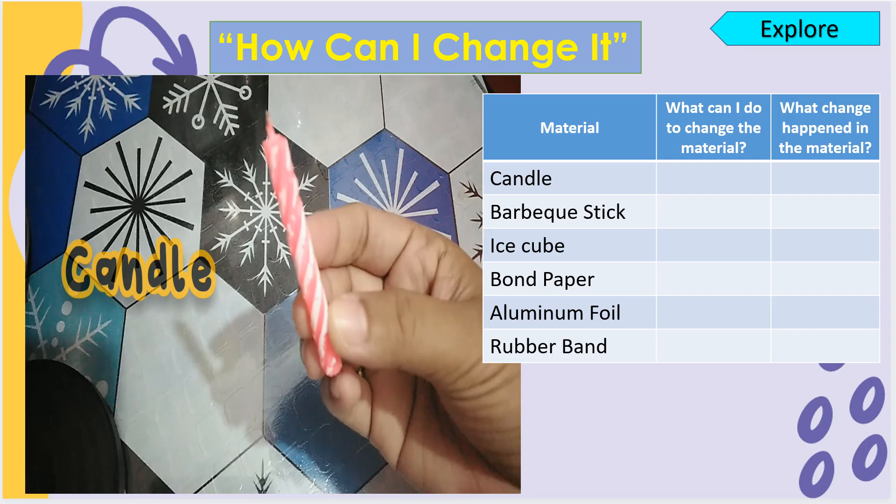Now, let's have a simple experiment. It was entitled 'How can I change it?' The materials are candle, barbecue stick, ice cube, sand paper, aluminum foil, and rubber band. And then later on, you are going to answer the chart: What can I do to change the material? And what change happened in the material? Are you ready? Let's begin!